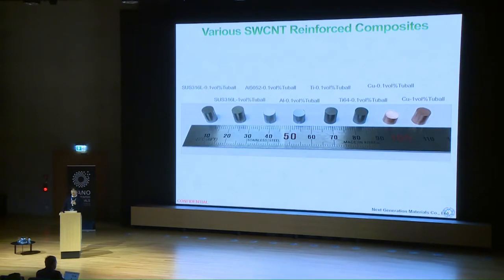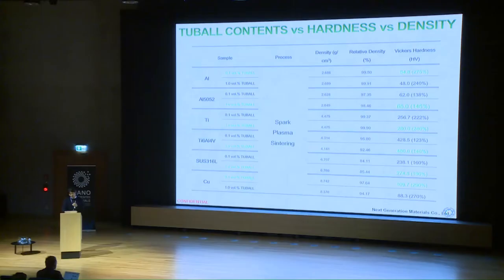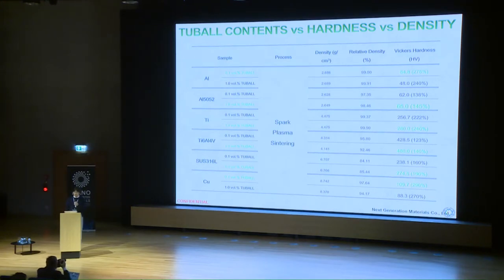CNT can be applied not only to aluminum matrix but also to stainless steel, magnesium, titanium, copper — it doesn't matter. Single-wall carbon nanotube can function as a reinforcing material in any metal matrix composite. Here is a summary of density and hardness results. Remarkably, with only 0.1 volume percent of carbon nanotube in copper, the composite shows 300 times higher hardness compared to pure copper.